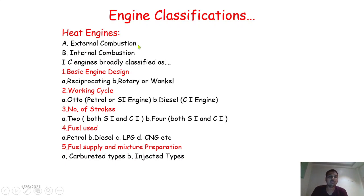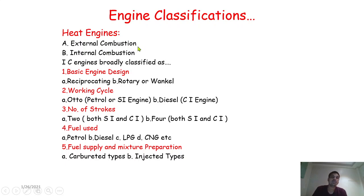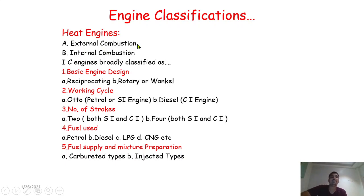To understand the external combustion engine, consider a steam power plant. In a steam power plant, water is a very important component. There is a steam generator and a steam turbine. Coal is used to generate heat; the coal burns, and that heat energy is transferred to water. The water converts into steam, which forces the turbine blades to rotate at high velocity, and with the help of a generator, electricity is produced.